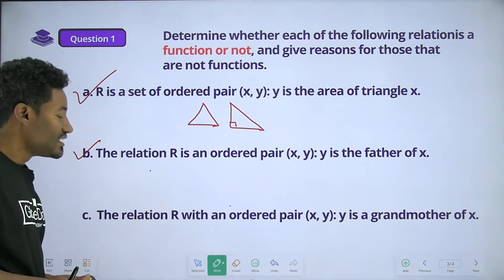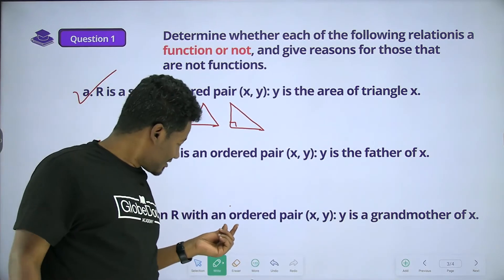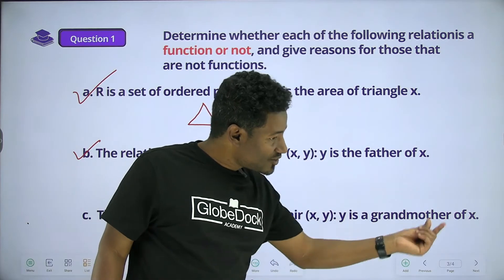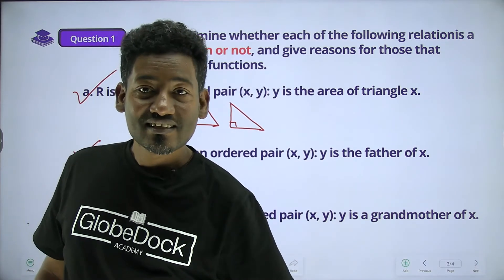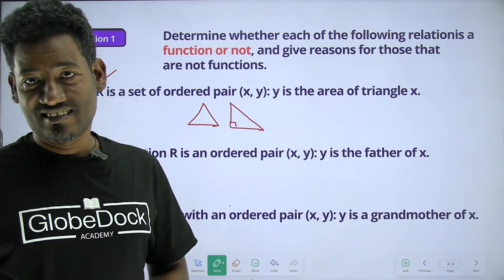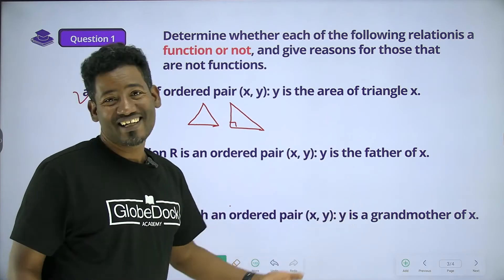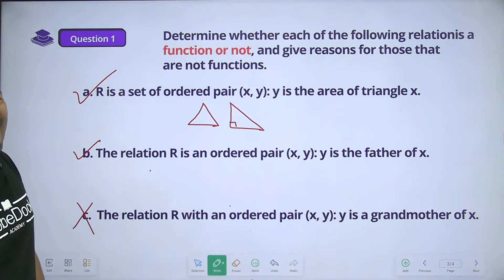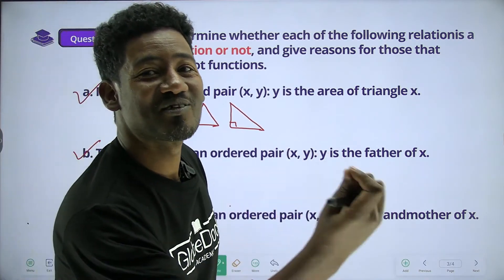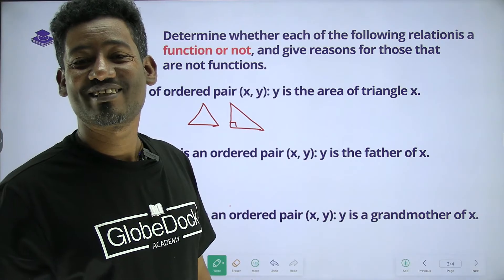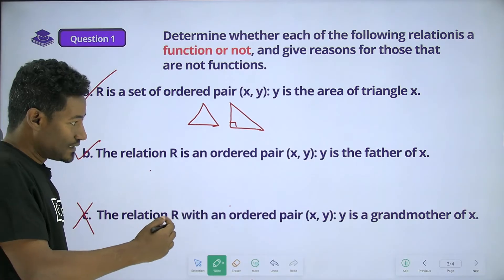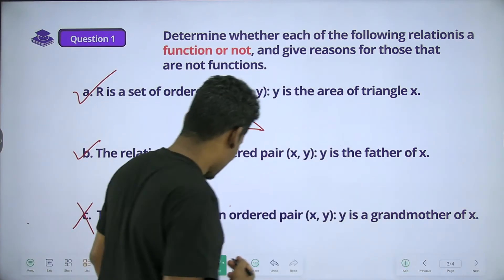Function here. The relation R with an ordered pair (X, Y): Y is a grandmother of X. Y is a grandmother of X. This is the relation. Y is a grandmother of X.